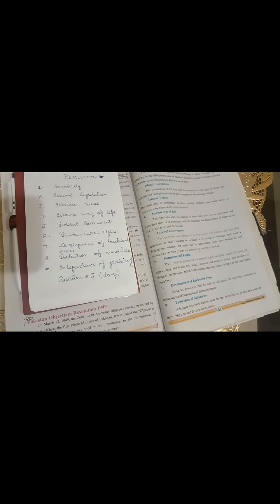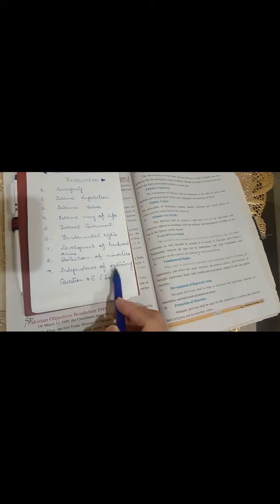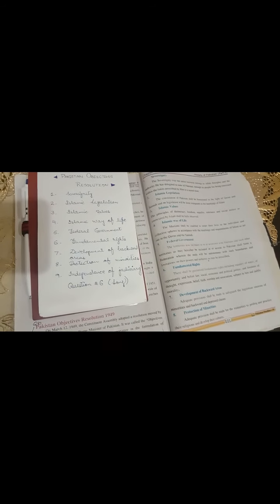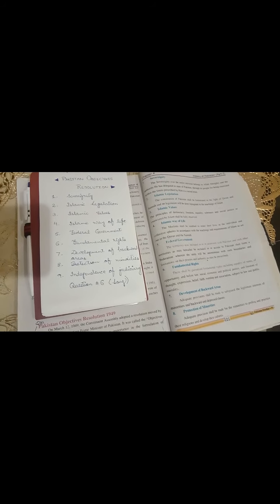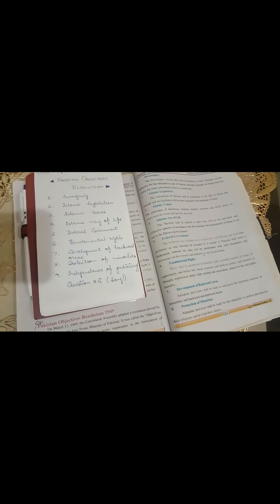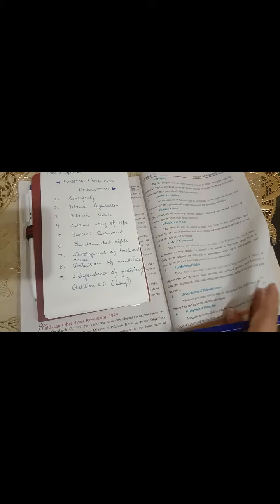Last point is independence of judiciary, the most important point in the sense کہ جو وہ ممالک ہمیشہ کامیاب ہوتے ہیں جن کے judicial system آزاد ہوتے ہیں. ان کے اوپر کوئی pressure نہیں ہوتا government کا to make the decision. اگر کوئی چیز غلط ہوئی ہے they are able to say that this is wrong اور اس میں amendment نہیں ہوتی. So this point was added کہ independent judiciary ہوگی.